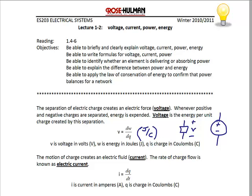The motion of charge creates an electric flow that we call current. The rate of charge is known as electric current, so I is equal to dq/dt, or current in amperes is coulombs per second. We typically represent the flow of current by using an arrow to show the direction, or if we're talking about a current source, we show the arrow in the source.